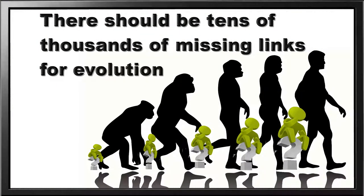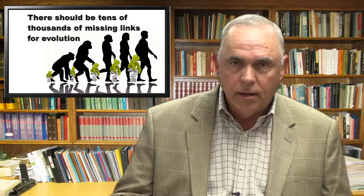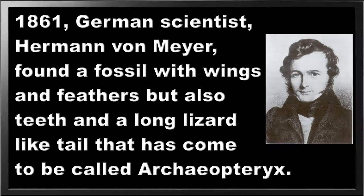There should be millions of missing links between every species, not just birds and dinosaurs. In 1861, German scientist Hermann von Meyer found a fossil with wings and feathers but also teeth and a long lizard-like tail that came to be called Archaeopteryx. Most of the time when you see skeletal remains in a museum, you're actually seeing plaster casts. This fossil is real — the animal existed. It's pretty well confirmed that the animal had feathers, and that's not really debated even among creationists at this point.